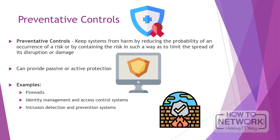These controls work by detecting attempts to cross a controlled access point boundary, testing this access attempt against sets of criteria, and sometimes issuing challenges to request further credentials from the requesting subject. These systems have the ability to sound alarms or alerts for failures and can generate log information for successfully authenticated attempts. As such, they are deterrent, prevention, and detection systems all at the same time.